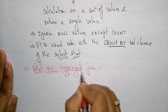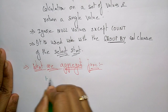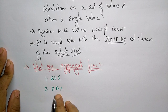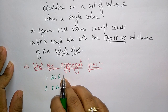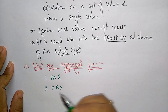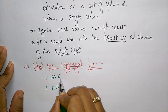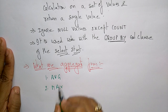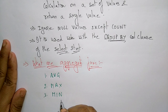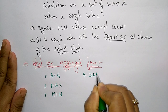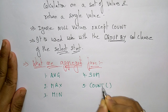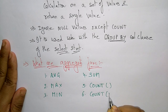The aggregate functions are: AVG (average), MAX (maximum), MIN (minimum), SUM (to find the total amount), and COUNT with COUNT(*). These are the different aggregate functions used in database management systems.